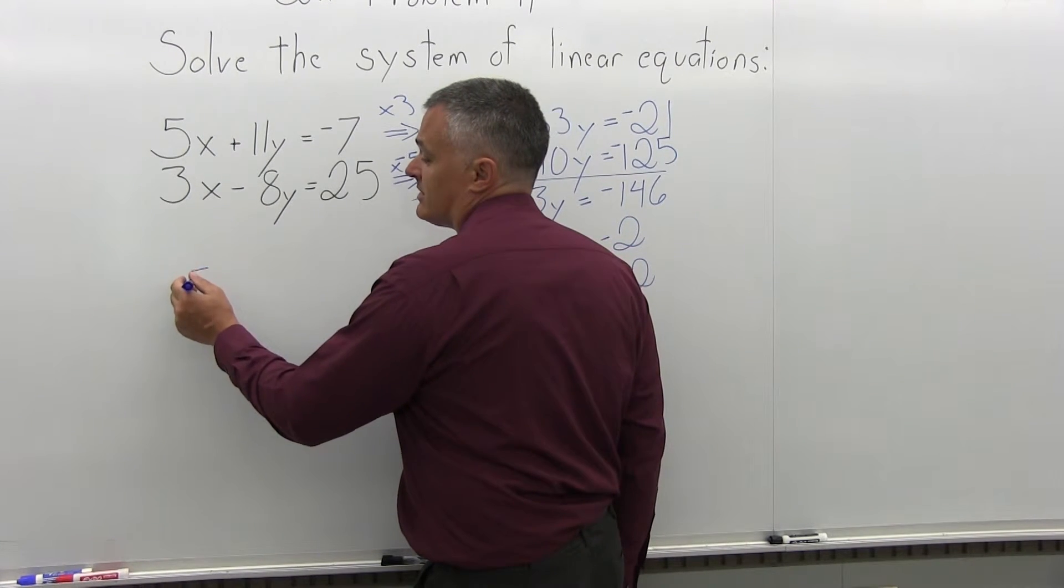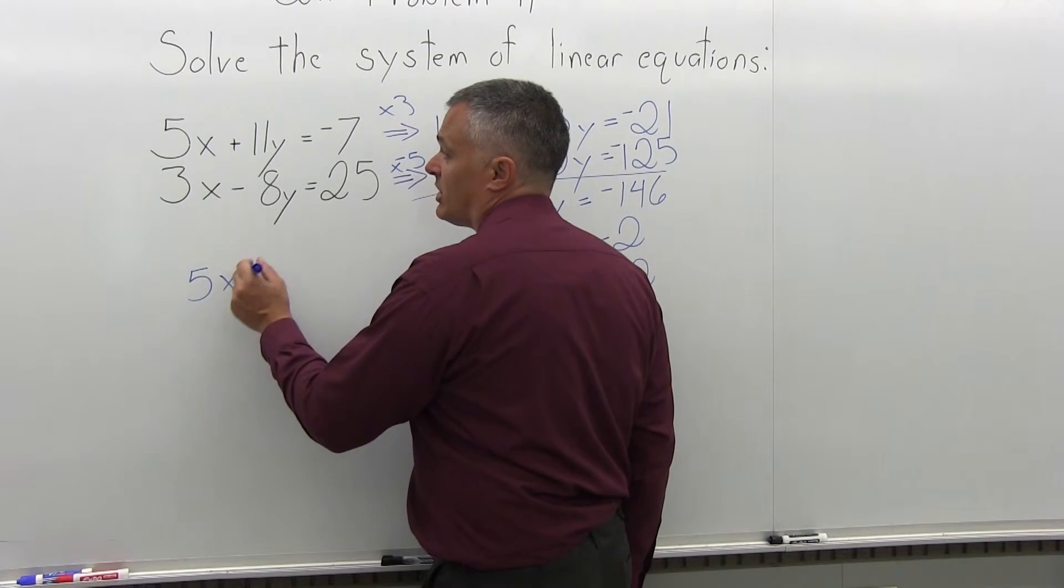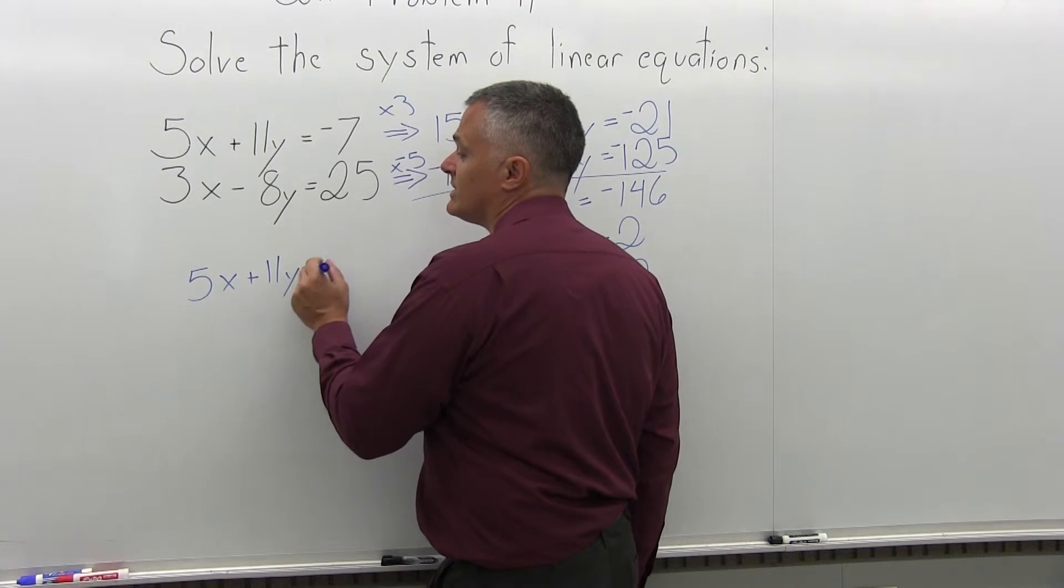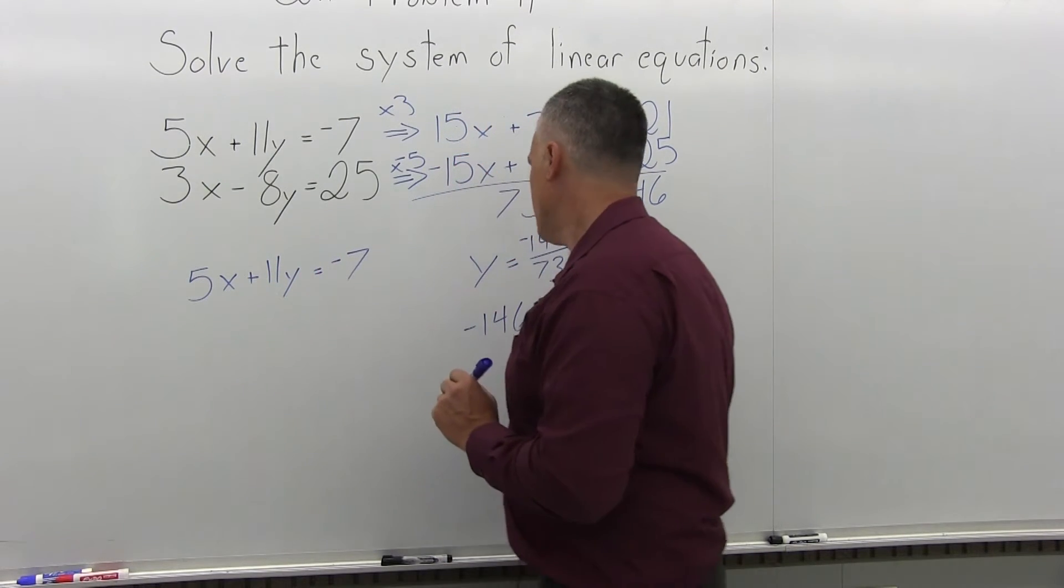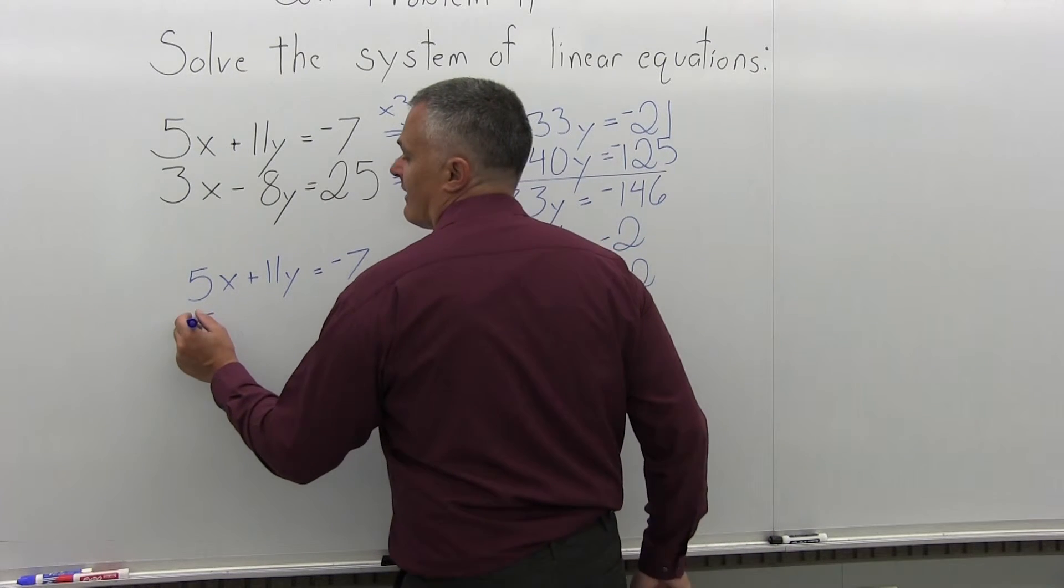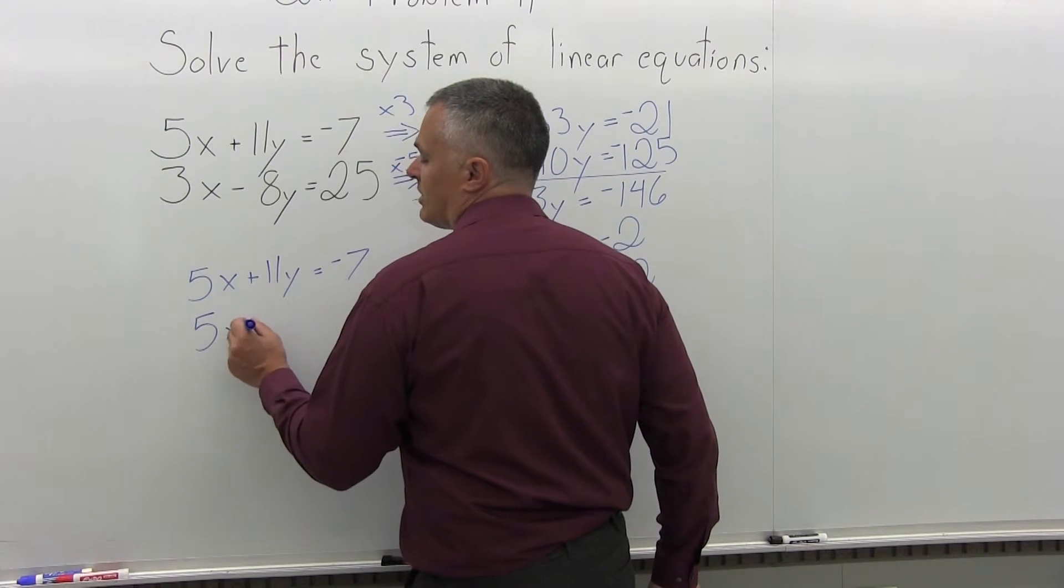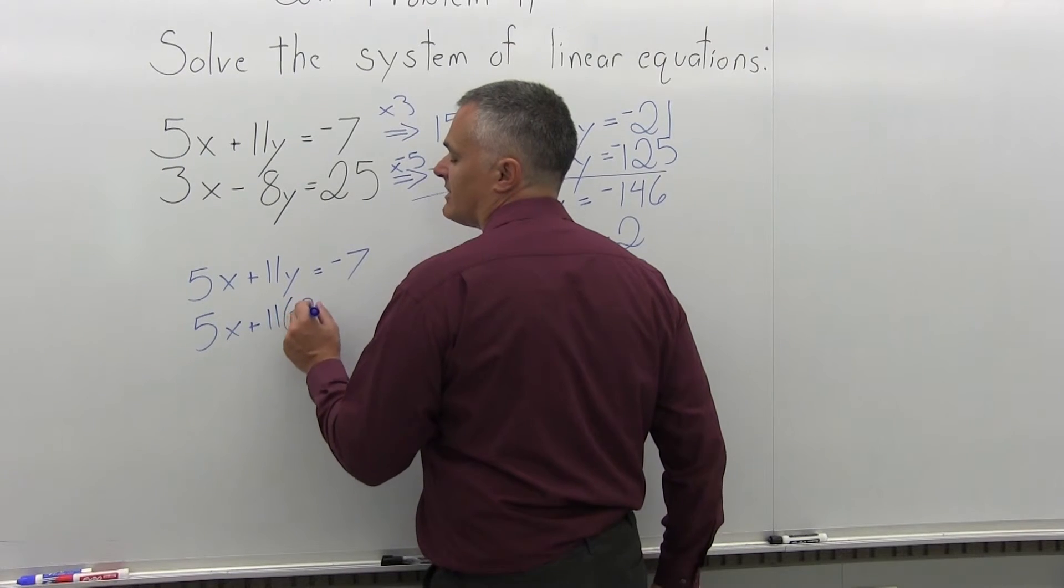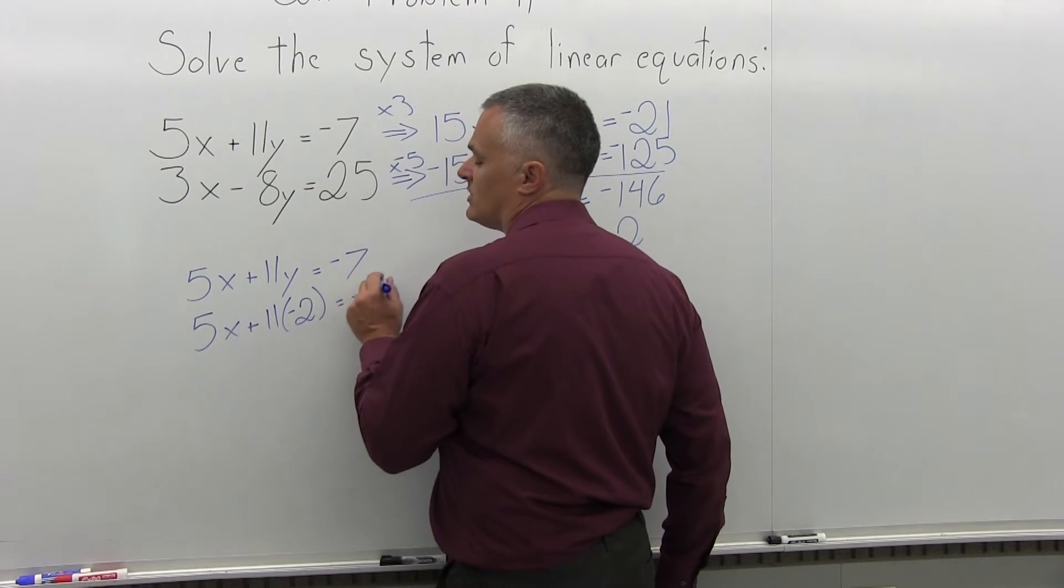There wouldn't be that big of a difference though. So I'll start with 5x plus 11y equals negative 7. And now that I know that y is negative 2, I'm going to have 5x plus 11 times y becomes 11 times negative 2 equals negative 7.